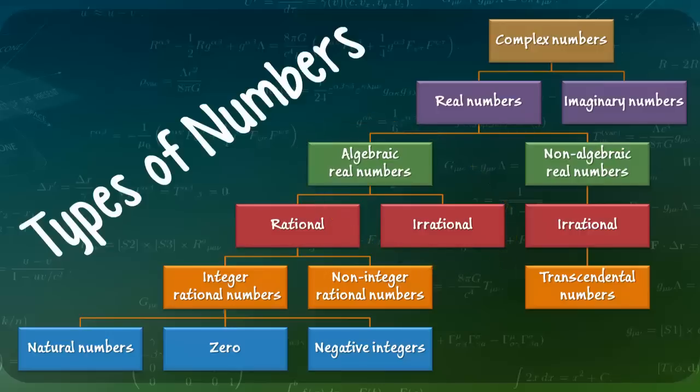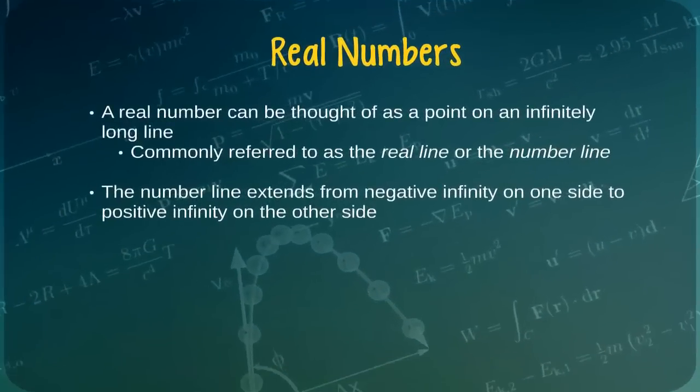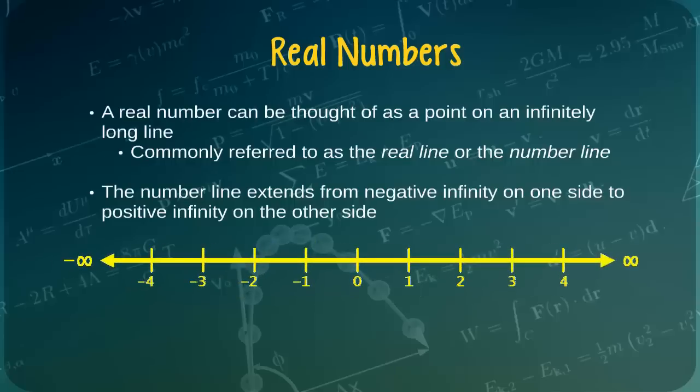Note also that all of the numbers that we have discussed thus far can be considered real numbers. A real number can perhaps best be understood as a point on an infinitely long line, which is commonly referred to by mathematicians as the real line or, more intuitively, as the number line. The number line extends from negative infinity on one side to positive infinity on the other side. The notion of distance has meaning on the number line, such that the distance between the integers 1 and 2, for example, is exactly equal to the distance between the integers 3 and 4.